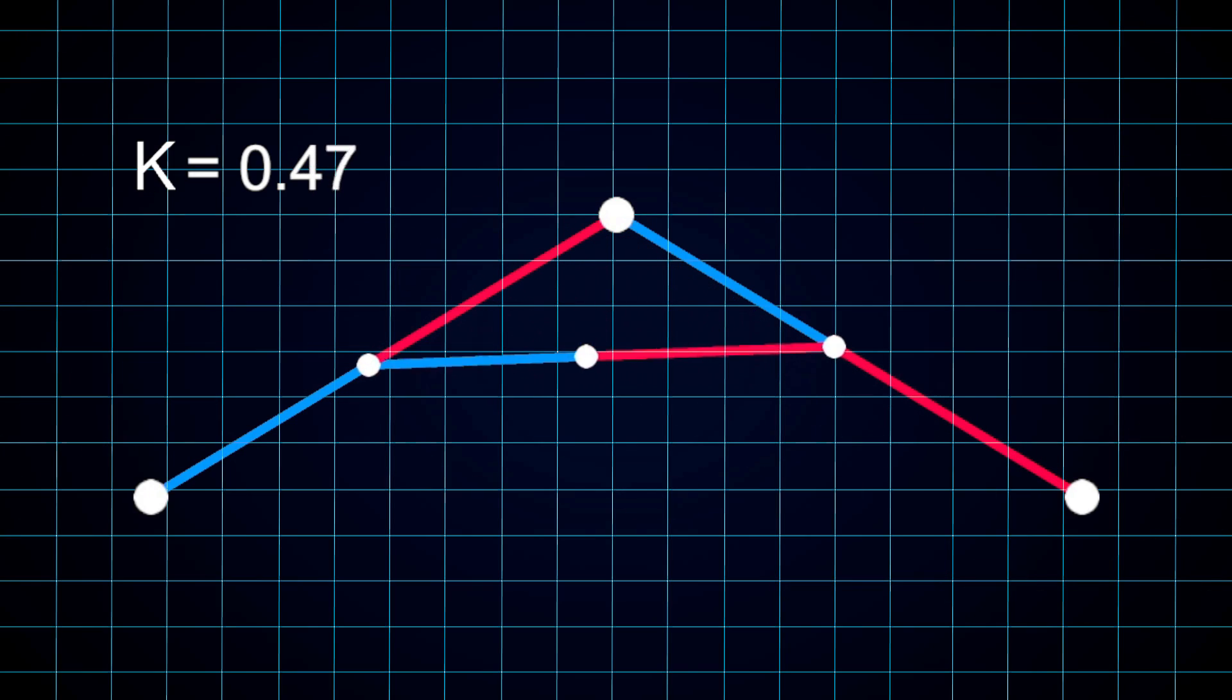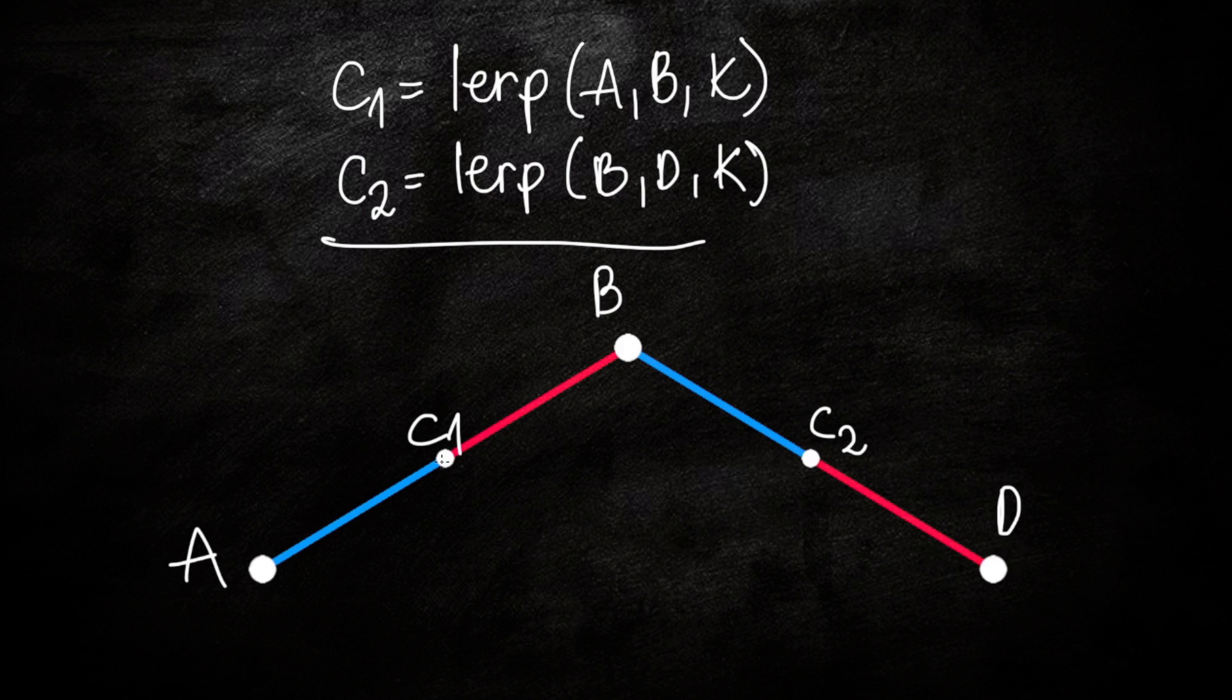If we connect the points C1 and C2, we're going to end up with this interesting pattern. So we now have another line connecting points C1 and C2, and in the middle we have another point which we're going to call C. The position of C is now lerp between C1 and C2 by the value k. This is actually all we need to create a curve.